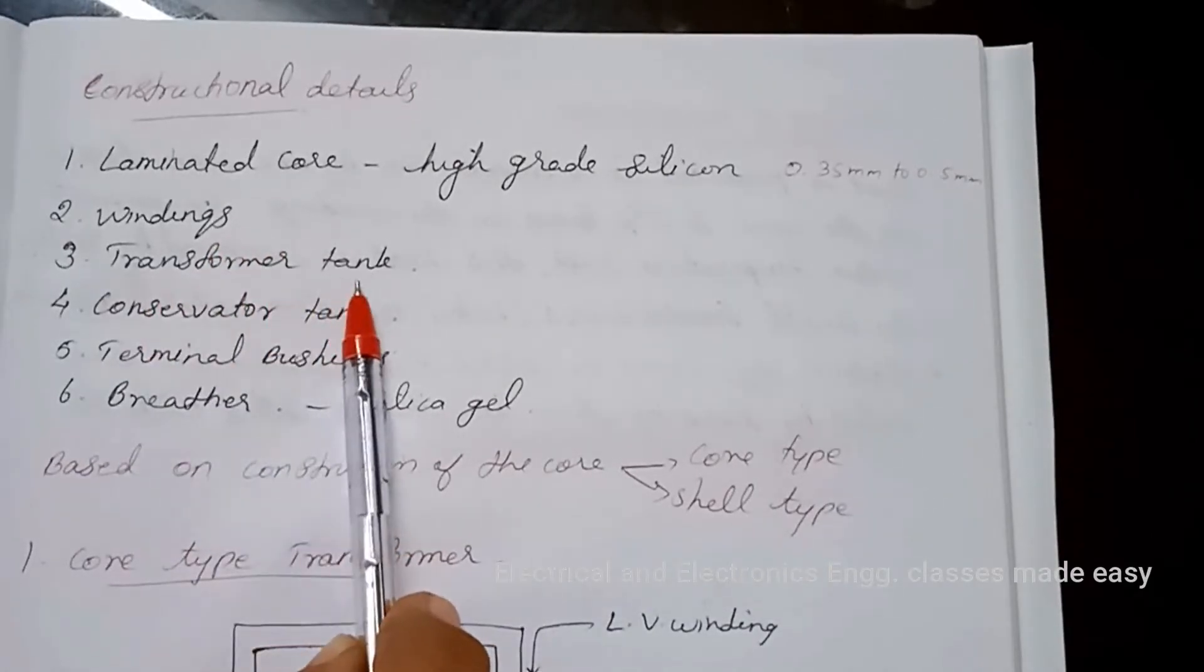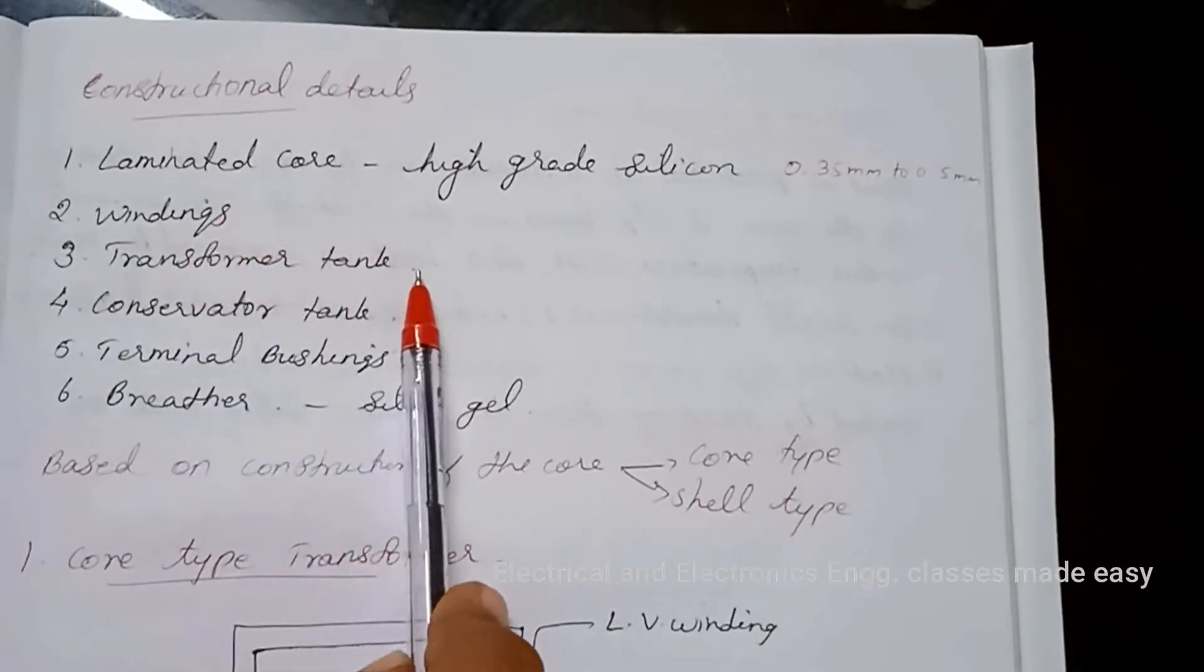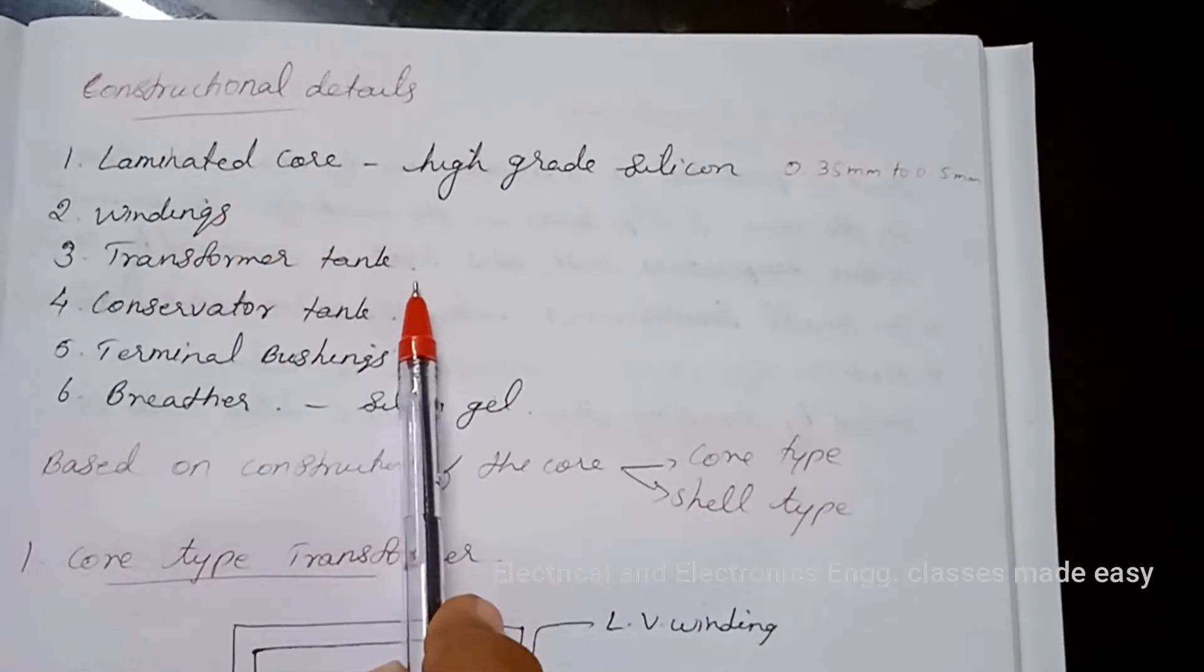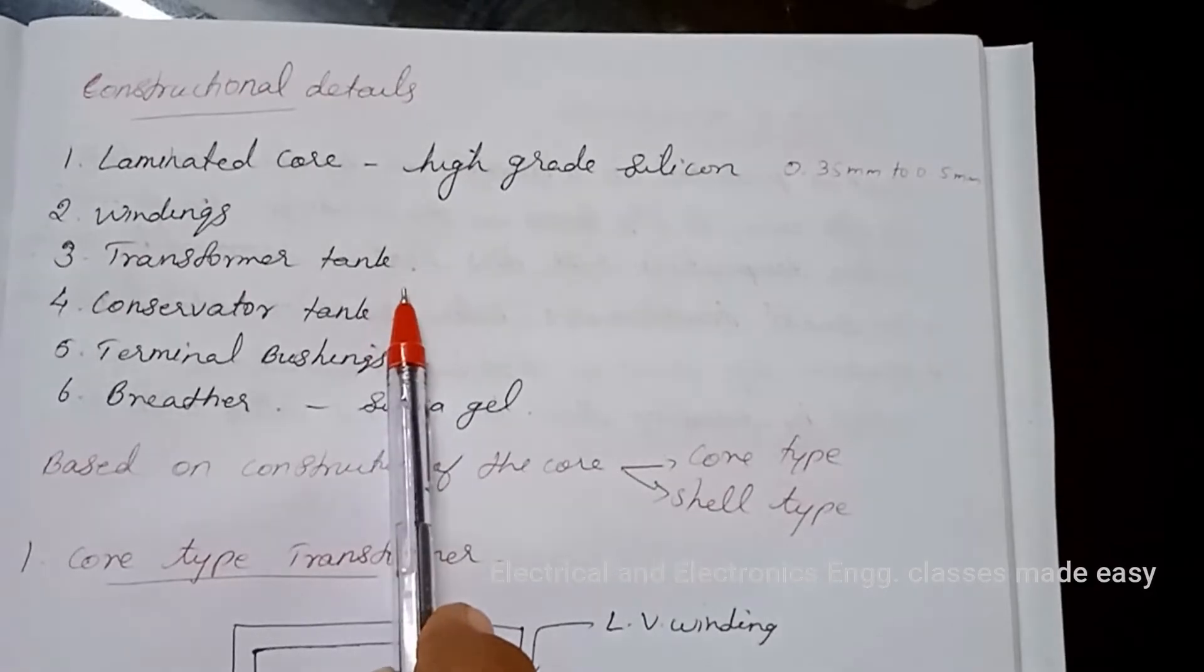Transformer tank. The assembled core and windings are placed within a sheet metal tank and immersed in oil. The transformer oil provides insulation to the winding and core and dissipates the heat produced to the surrounding media.